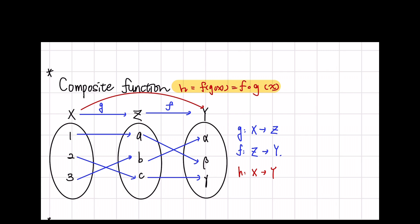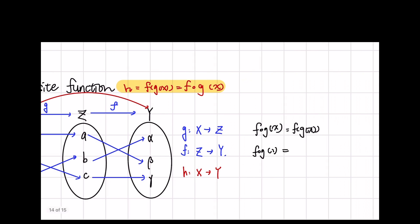When we input x into f composed with g, it turns out f of g of x. So f of g of 1 is equal to f of a, which is equal to beta. And f of g of 2 is equal to f of c, which is equal to gamma. And f of g of 3 is equal to f of b, which is equal to alpha.